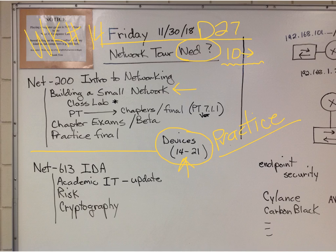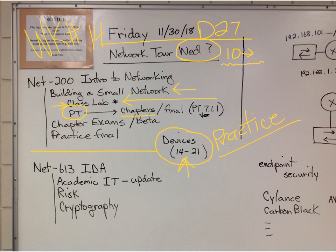We're currently working on chapter 11: building a small network. We're going to do all the work in a class lab, so you don't really need to do any other outside labs from the curriculum. But you should try to work through as many packet tracers as you can. Work through chapter 11 and make sure you get that done. We also have that final packet tracer in the skills test area, and in order for it to get graded correctly, you should do it with packet tracer version 7.1.1.